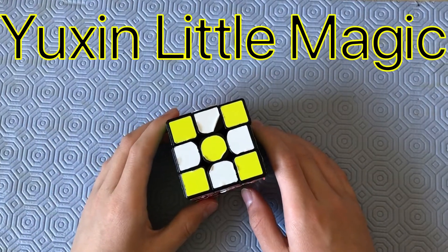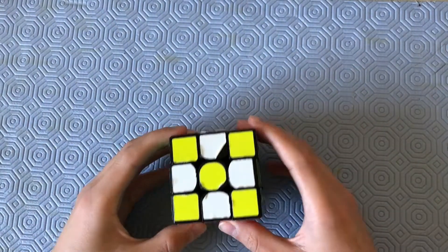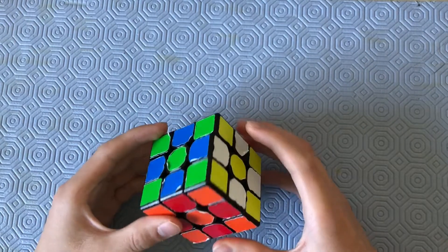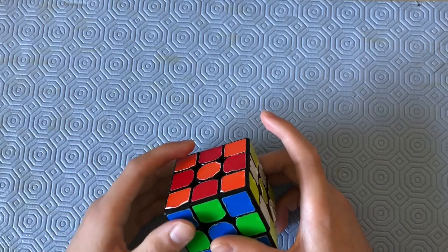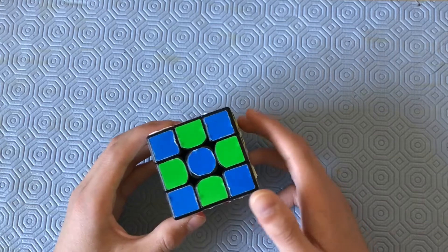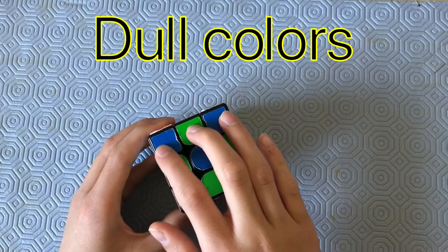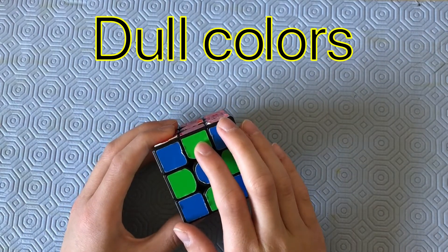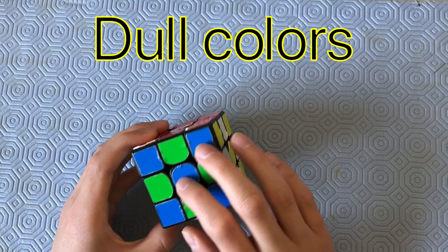We're going to start off the shades with the Yushin Little Magic. So, as you can see in this checkerboard pattern, some of the colors do not really look contrasting from the others. For example, the blue and green. The green's a little bit dull, while the blue is also dull.